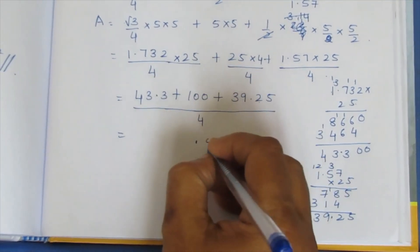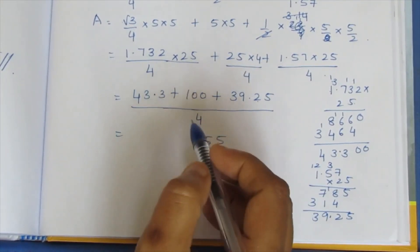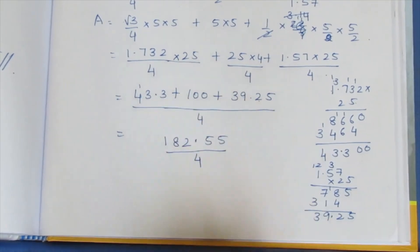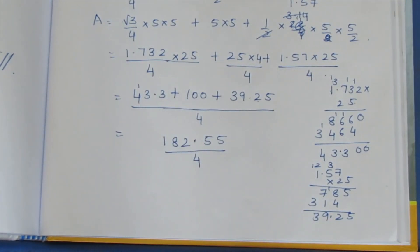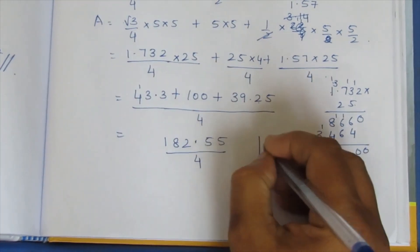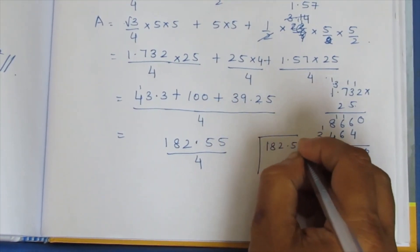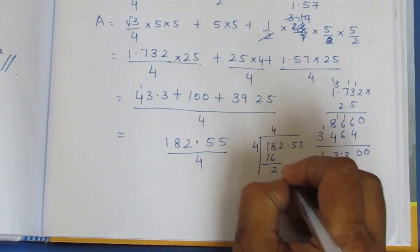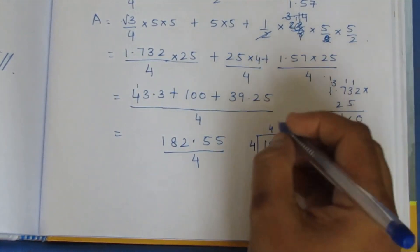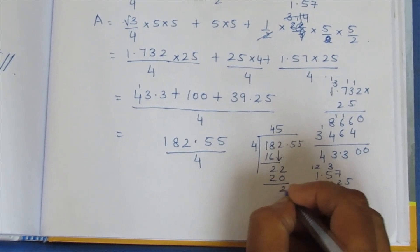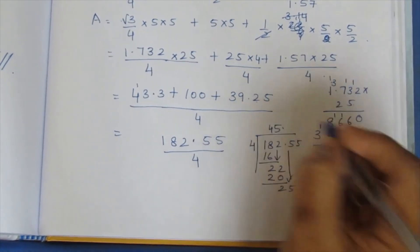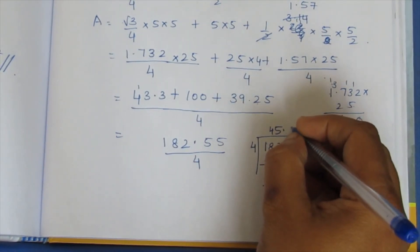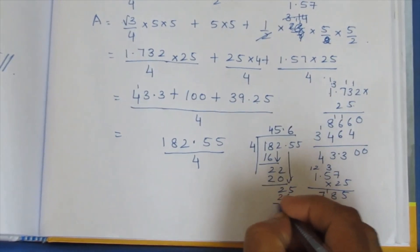So we divide 182.55 by 4. For the division: 4 fours are 16, remainder 2. Bring down: 2 fives are 25, 4 fives are 20, remainder 5. Place the decimal point. Bring down: 4 sixes are 24, remainder 1. Bring down 5: 4 fours are 16, remainder 12.